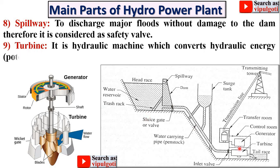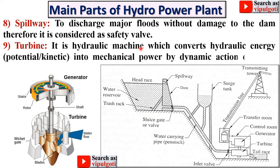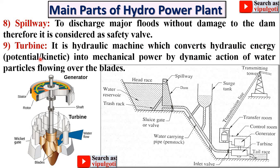Next: turbine. Here you can see this one is the turbine. It is a hydraulic machine which converts hydraulic energy — in the form of potential and kinetic energy — into mechanical power by the dynamic action of water particles flowing over the blades. Here you can see the turbine, the blades, and the direction of water flow. Due to that water flow the turbine rotates, converting potential and kinetic energy into mechanical energy.